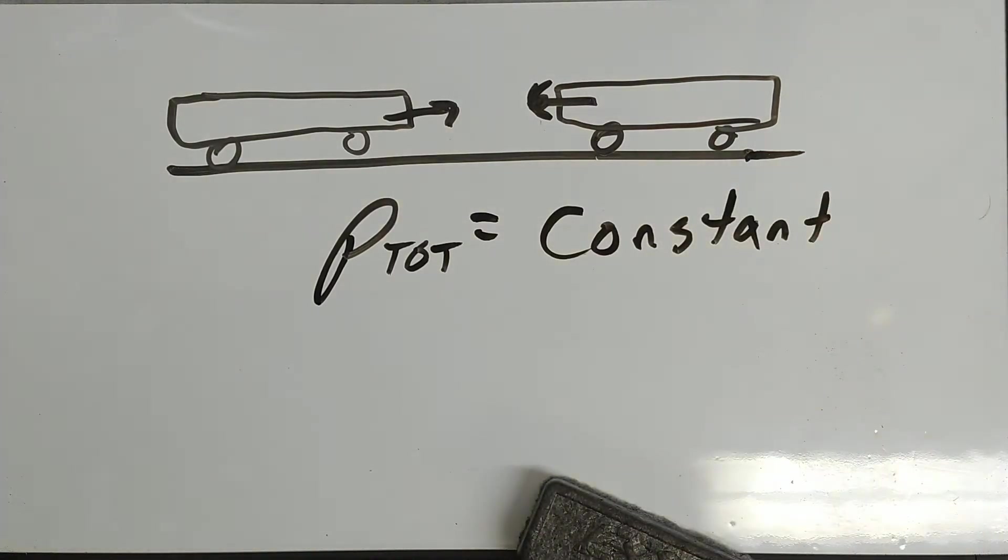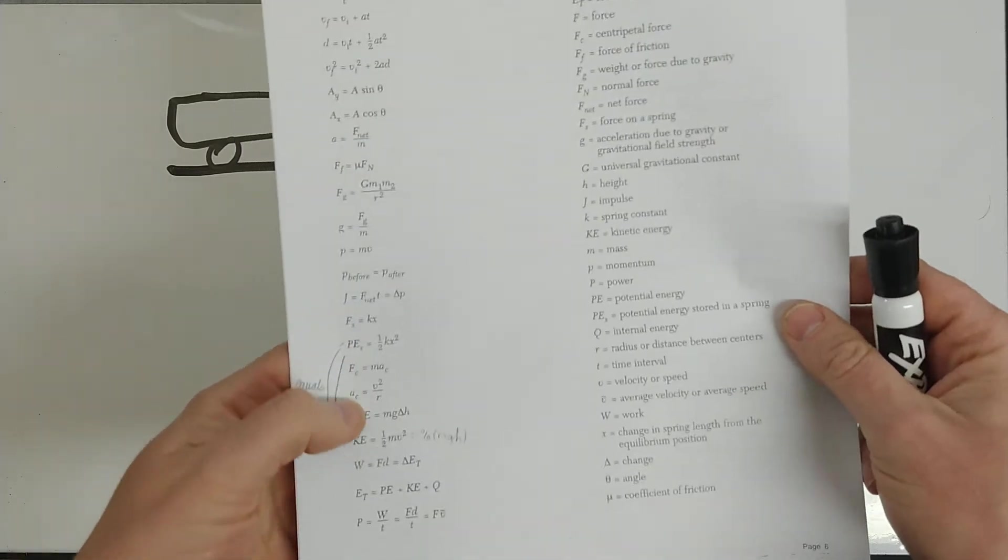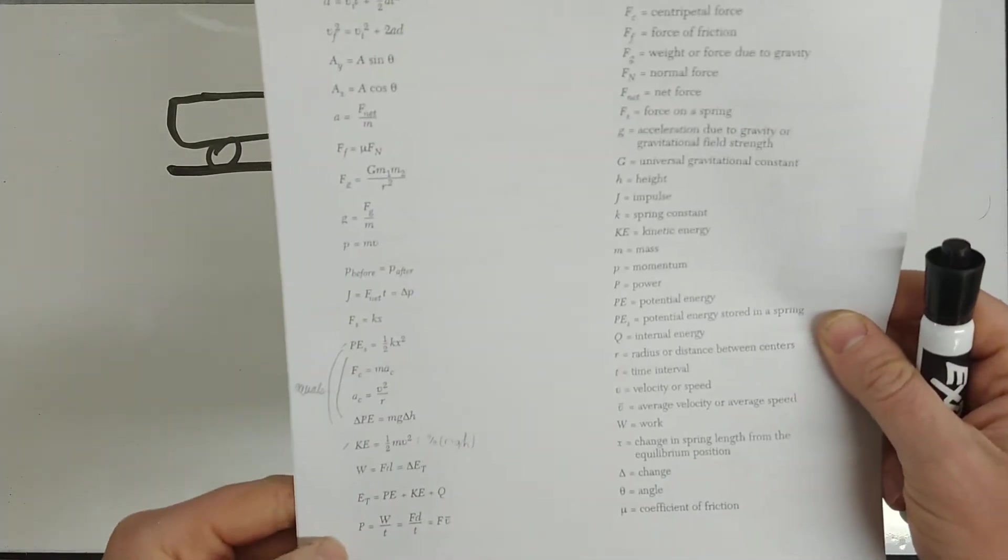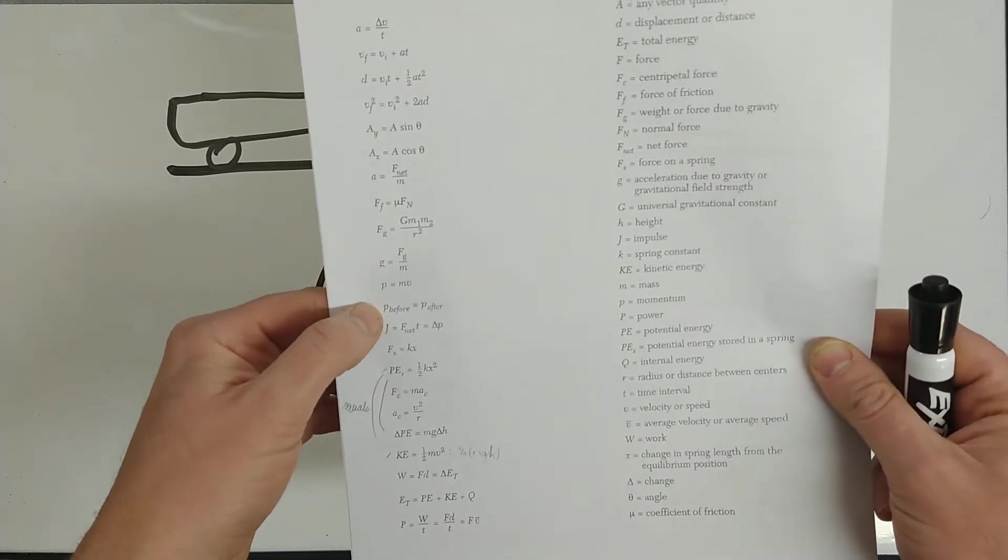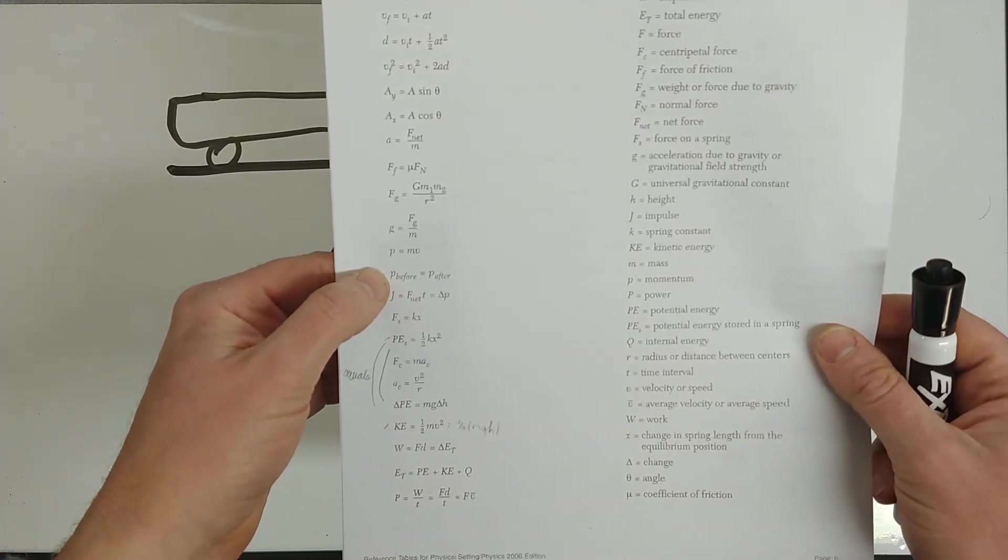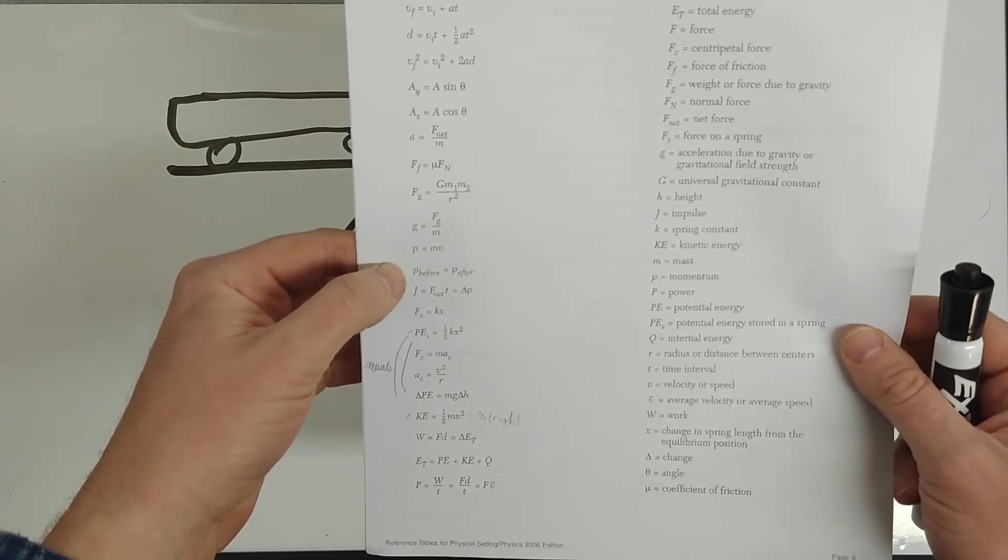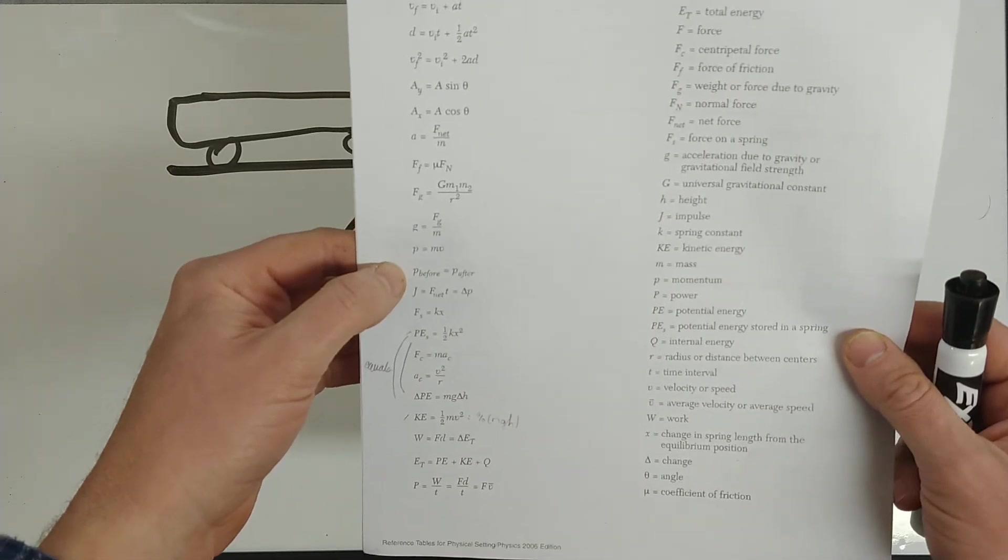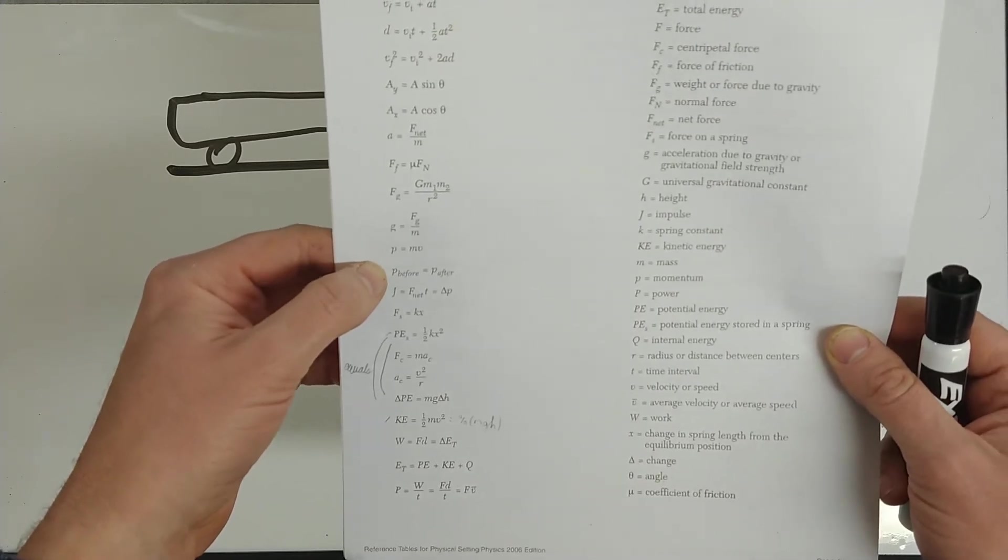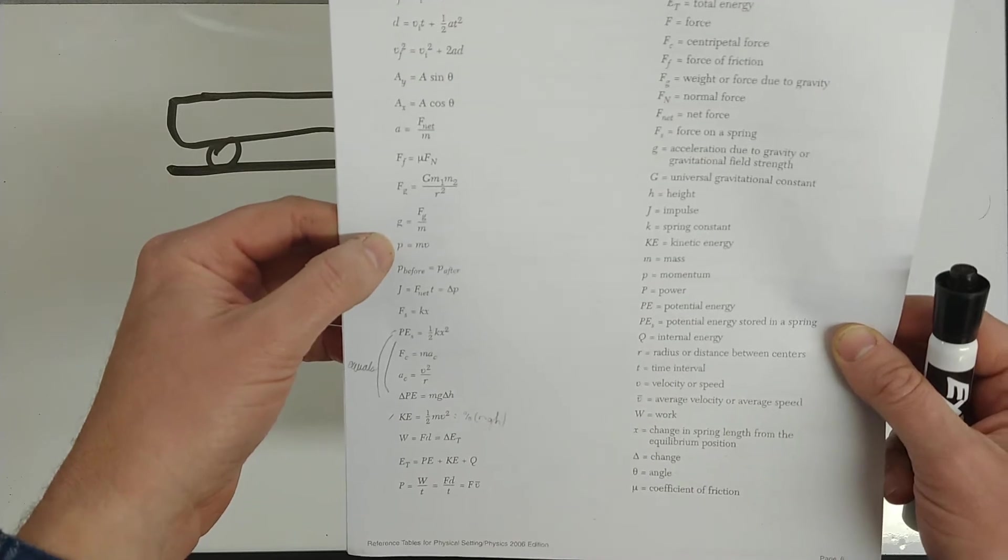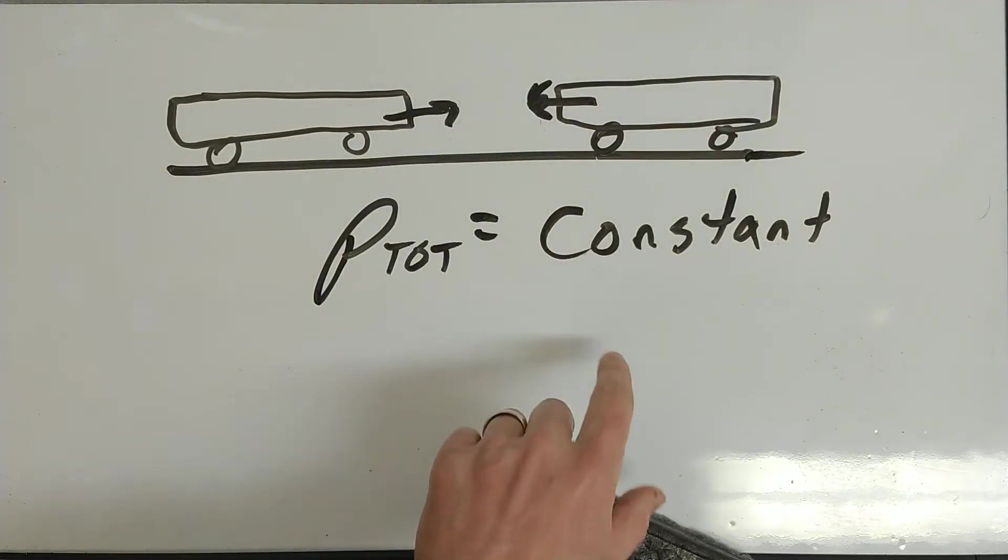The reference table actually gives you an equation for this. This is our last equation in the mechanics part. Check it out: p before equals p after, p equals mv, j equals ft, impulse equals delta p. So p before equals p after means the momentum before the collision or interaction equals the total momentum after. Momentum is conserved—the momentum at any given time is p equals mv.